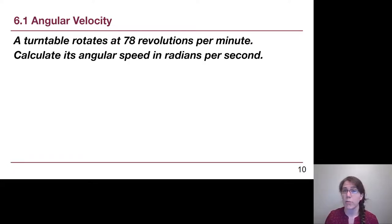Let's think about a couple of small examples. I want us to, if we have the time and ability, pause the video and try this on our own. Here we have a turntable that rotates at 78 revolutions per minute. I want you to think about what kind of unit that really is describing. We're asking to calculate its angular speed in radians per second.